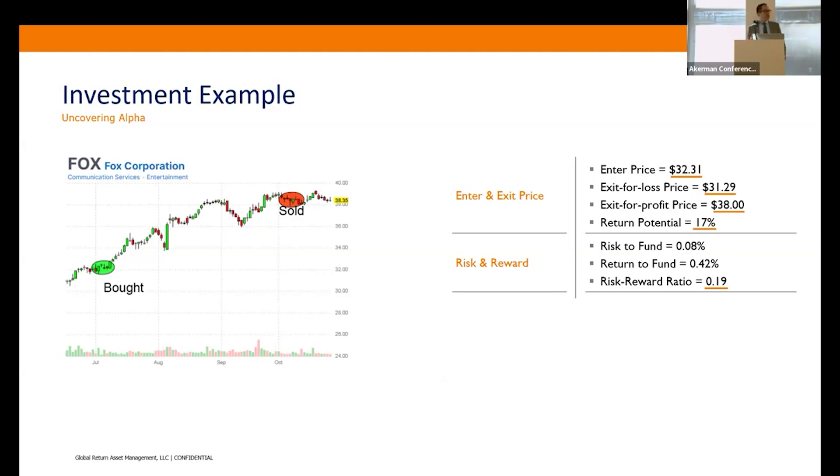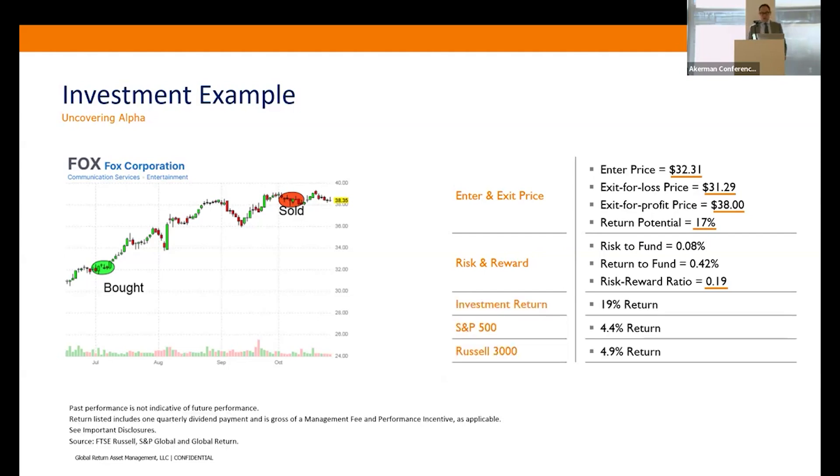You can look at that 19 as we're risking 19 cents to make one dollar. How did it work out? The investment generated a 19% return over the same period of time. S&P 500 was a little over 4%, Russell 3000 a little under 5%, and that's how we're uncovering and capturing alpha.